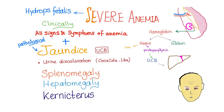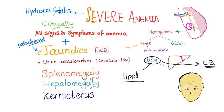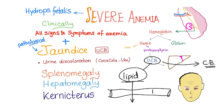What is kernicterus? Unconjugated bilirubin is lipid soluble. The whole goal of conjugation is to transform lipid-soluble unconjugated bilirubin into water-soluble conjugated bilirubin so that we can excrete it in the urine. Unconjugated bilirubin, being lipid soluble, can pass through lipid membranes — specifically the blood-brain barrier, which is a lipid bilayer membrane. Since we are talking about a baby, this blood-brain barrier is immature, allowing lots of unconjugated bilirubin to pass into the brain, causing yellow discoloration of the basal ganglia, cerebral cortex, cerebellum, and spinal cord.